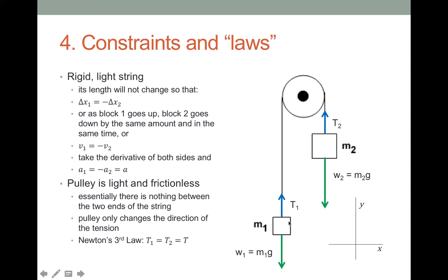Now we can consider the tensions. This pulley has no mass and applies no forces, so there's nothing between one end of the string and the other. When you have a string and you're pulling on both ends, you must have the same tension on either end. By Newton's third law, T1 must equal T2 — but that is only true because what's in between them is a massless, frictionless pulley that takes no effort to move. The only thing this pulley does is change the direction of the tension. So T1 equals T2, and since the subscripts are irrelevant, I'm just going to call the tension T.